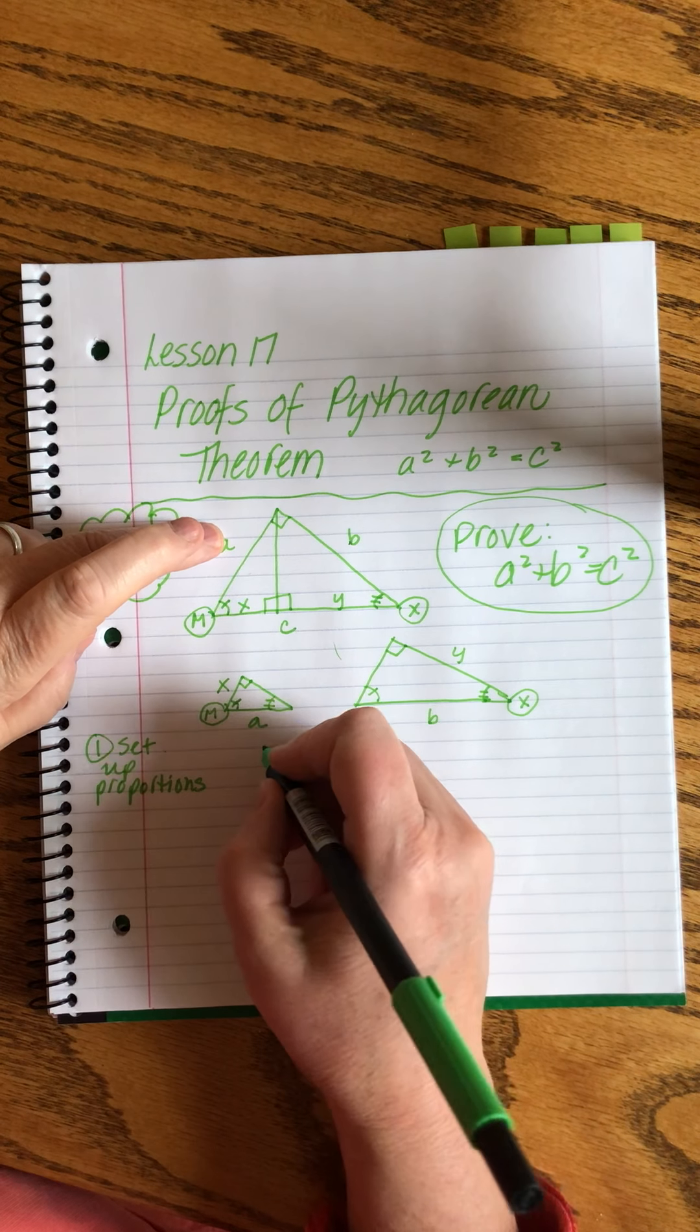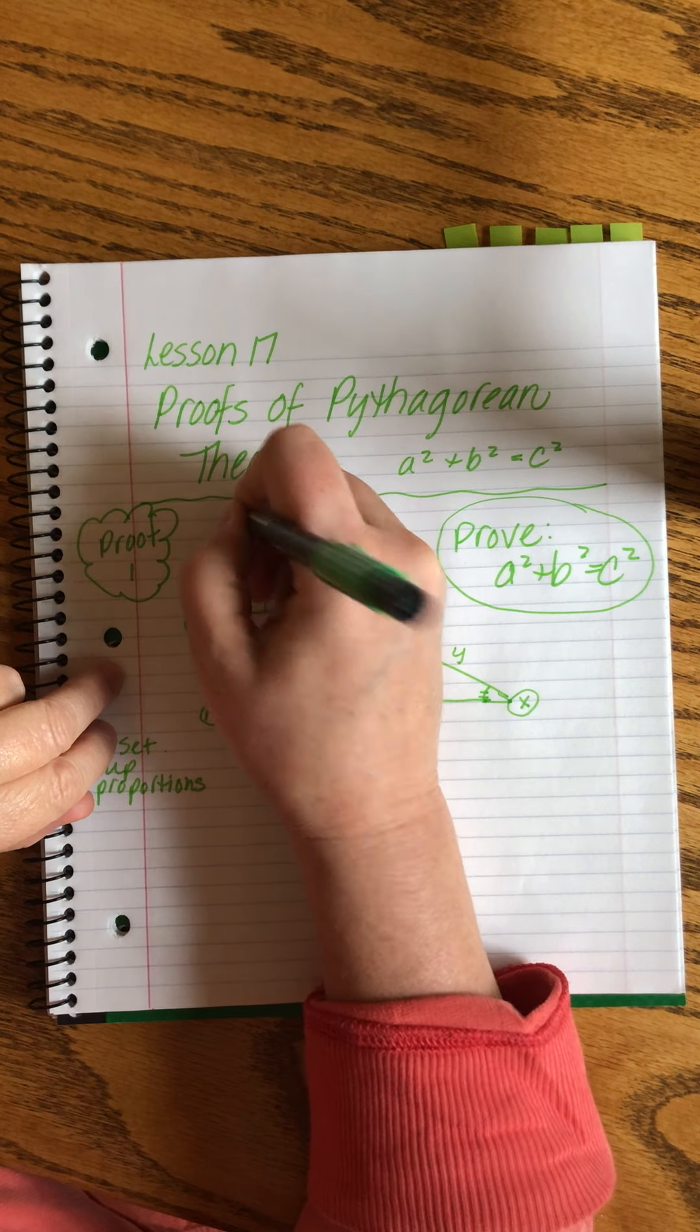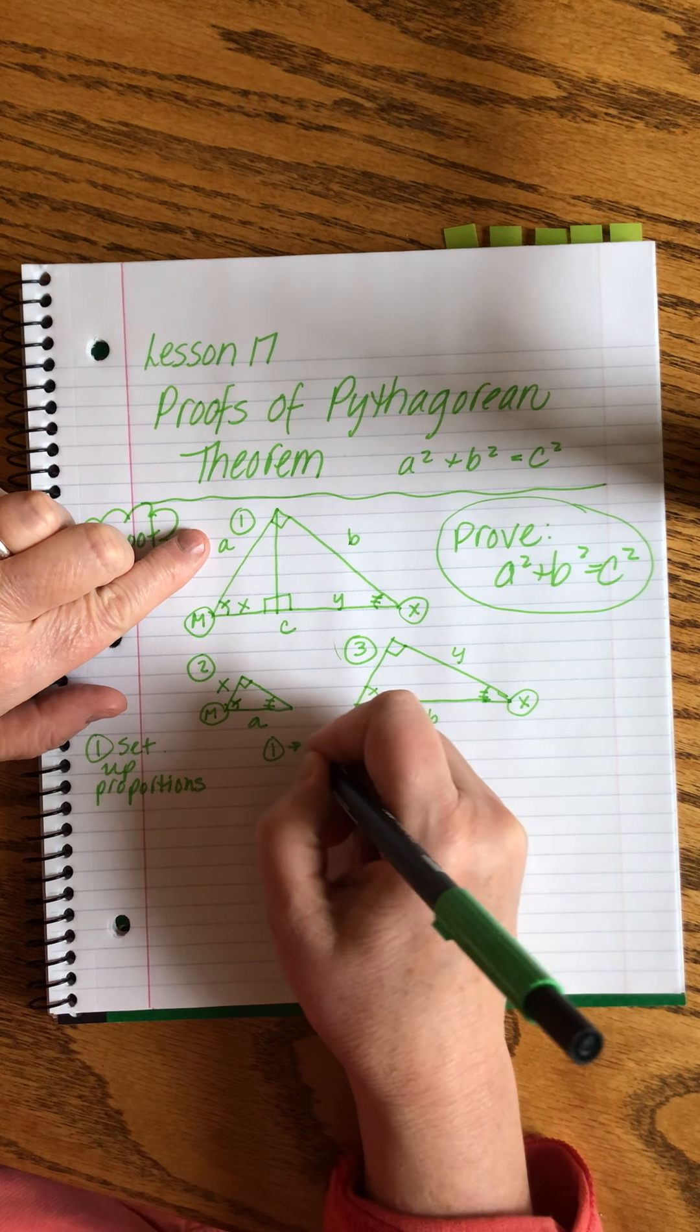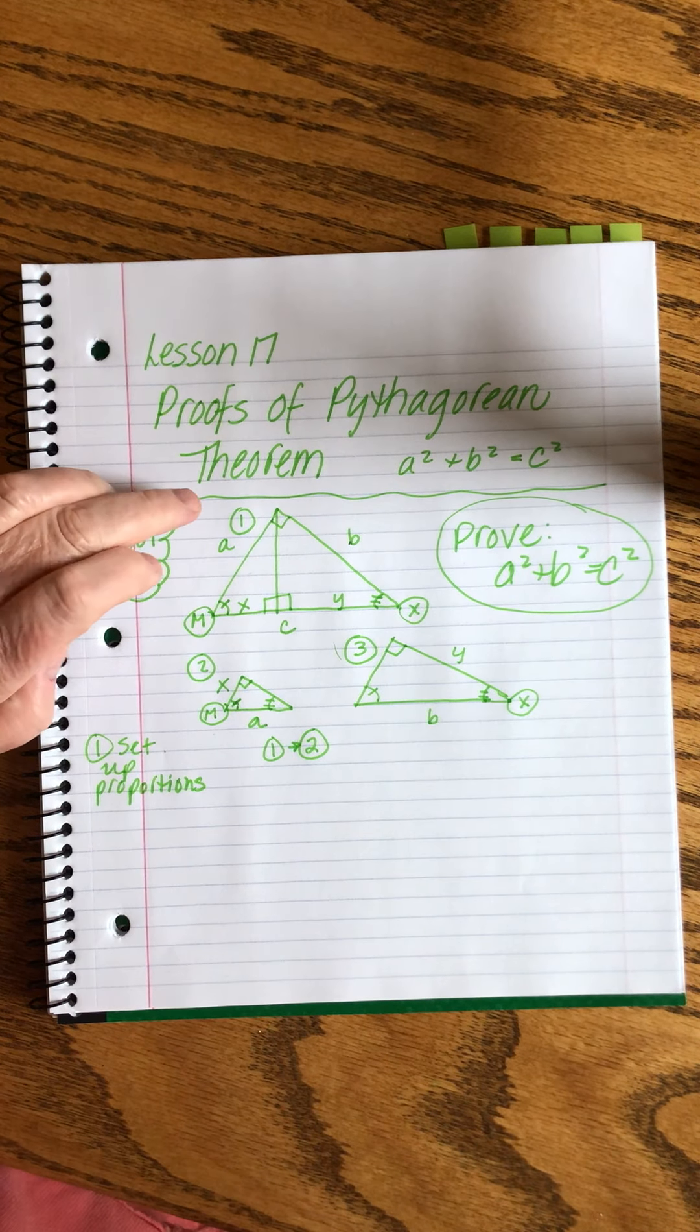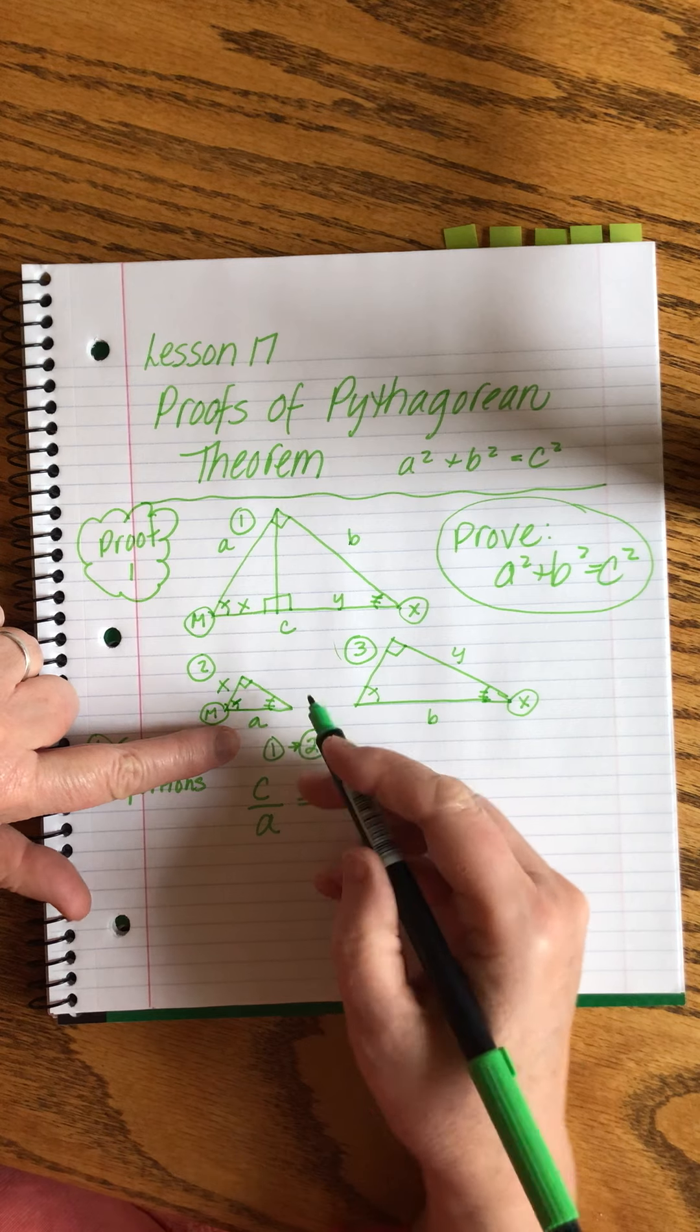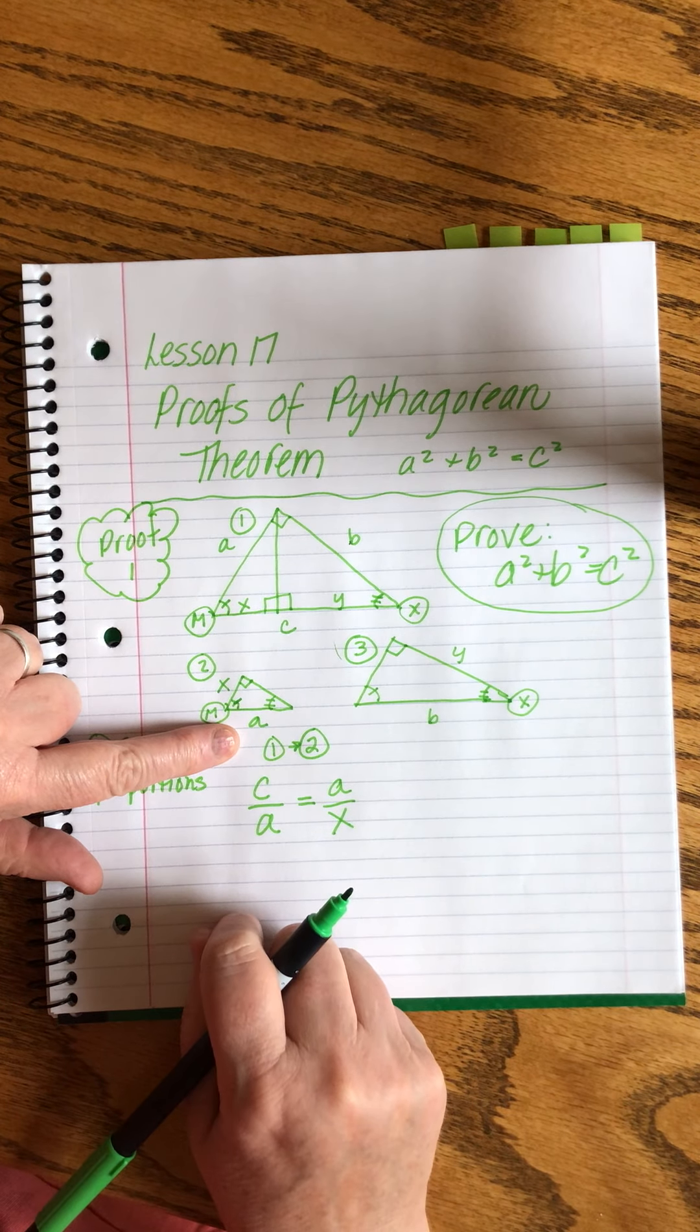So what I'm going to do is between, if we call this triangle one and this triangle two and this triangle three, I'm going to set up proportions between one and two. And the way that I do that is to say the hypotenuse over the short leg equals the hypotenuse over the short leg.